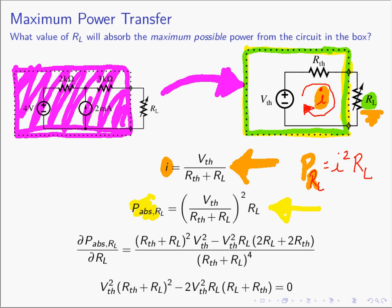What we want to do is find the maximum possible power absorbed in R sub L. If you remember from calculus, to find the maximum of a function you need to differentiate it. So the derivative of the power absorbed is given by the third formula. We see that we have R sub L in both the denominator and the numerator. Remember the derivative of a fraction is low D high minus high D low over low squared. So we take the denominator times the derivative of the numerator, minus the numerator times the derivative of the denominator, over the denominator squared. This is the derivative of the power in R sub L with respect to R sub L — because R sub L is the variable we're turning the knob on.